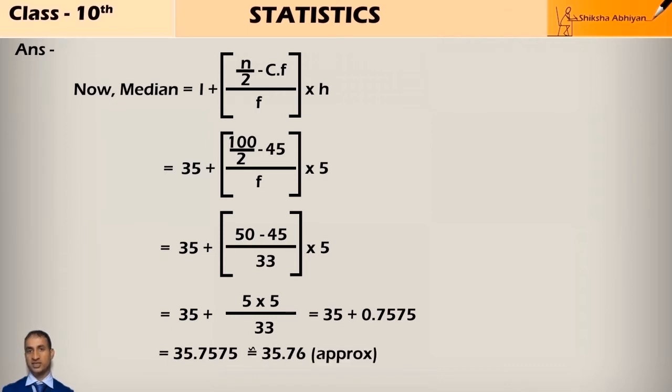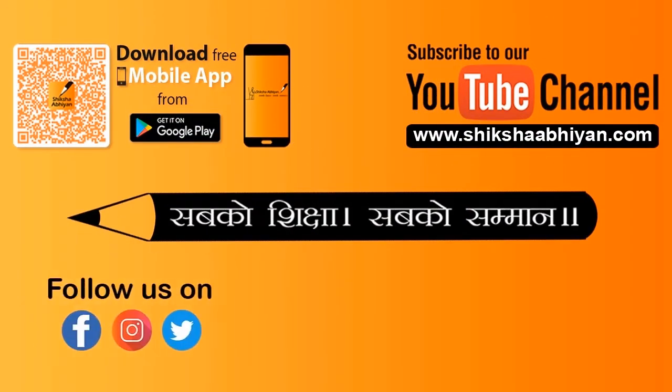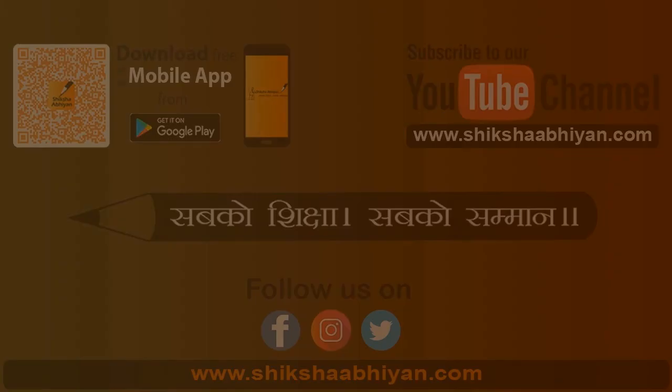So 35 plus 0.7575 is 35.7575, and approximately it will be 35.76. This is our median.